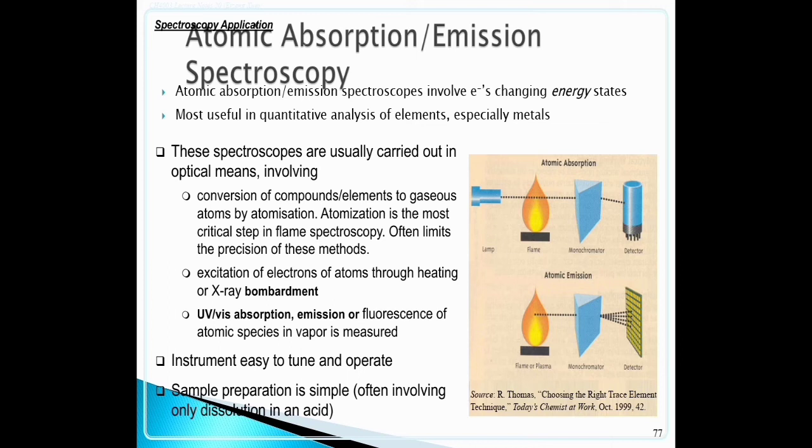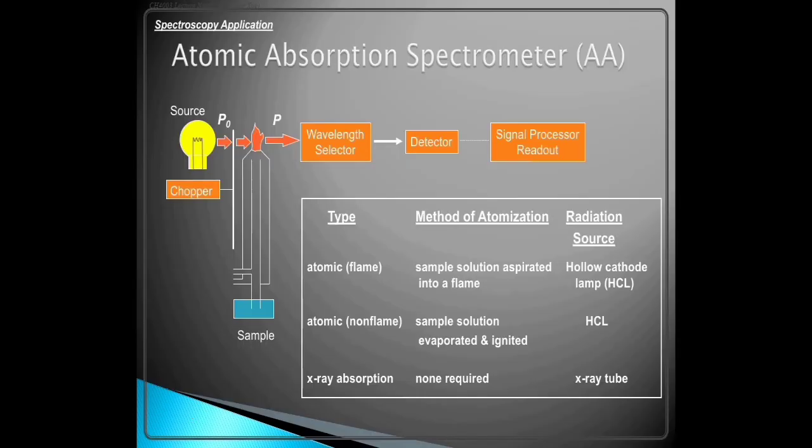Excitation of electrons of atoms through heating or x-ray bombardment. Ultraviolet visible observation emission or fluorescence of atomic species in vapor is measured. Instrument is easy to tune and operate. Sample preparation is simple, often involving only dissolution in an acid.